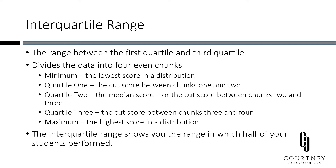Interquartile range is related to the range, except it is the distance between the first and third quartiles. Quartiles divide your scores into four even chunks. Starting with the minimum score, the first quartile divides the bottom half of scores into two. The median is the exact middle score. The third quartile divides the upper half of scores into two even chunks. This measure shows you how far apart the middle half of your students are performing and allows you to control for outliers.